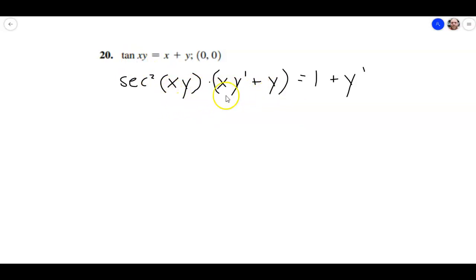So the next thing I'm going to do, let's go ahead and distribute this, because we have a y prime in there, so we're going to need to get that in a term by itself. So this is going to be x y prime times the secant squared of xy, plus y times secant squared of xy. And this is going to be equal to 1 plus y prime.